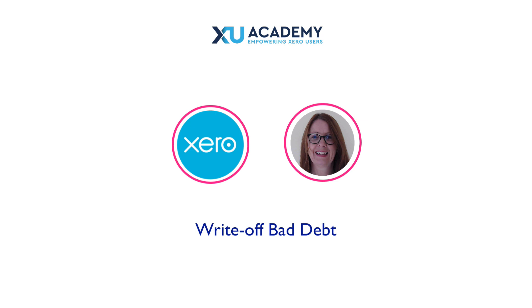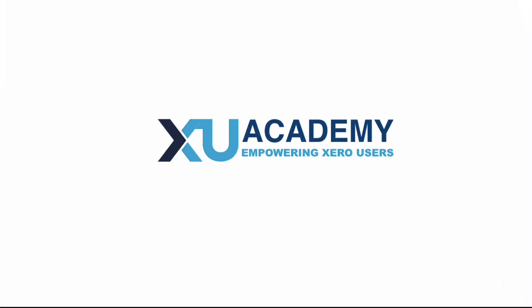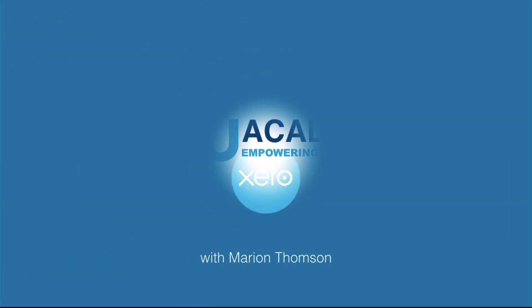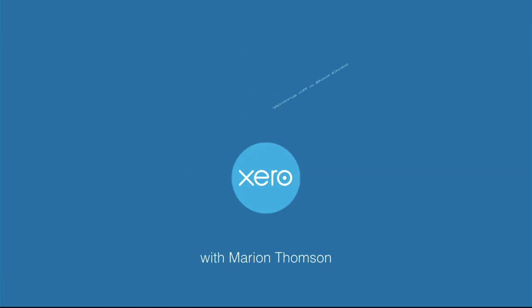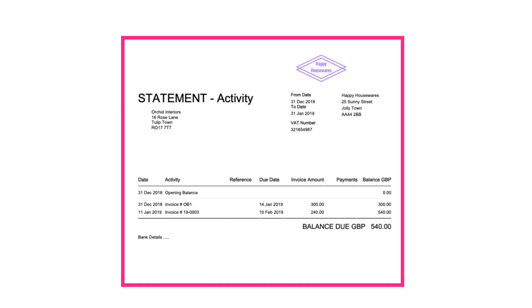In this exercise we're going to look at writing off a bad debt in Xero. We know that ORCID Interiors are not going to pay and they've got a balance of £540.